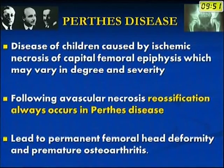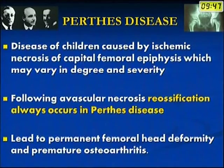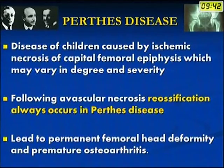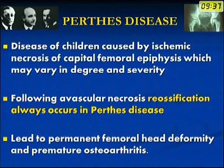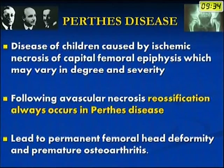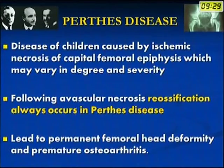Perthes disease is a disease of children caused by ischemic necrosis of the capital femoral epiphysis, which may vary in degree and severity. Following avascular necrosis, re-ossification always occurs in Perthes disease. This is unlike the classical avascular necrosis seen in adolescents and adults, where re-vascularization does not occur.